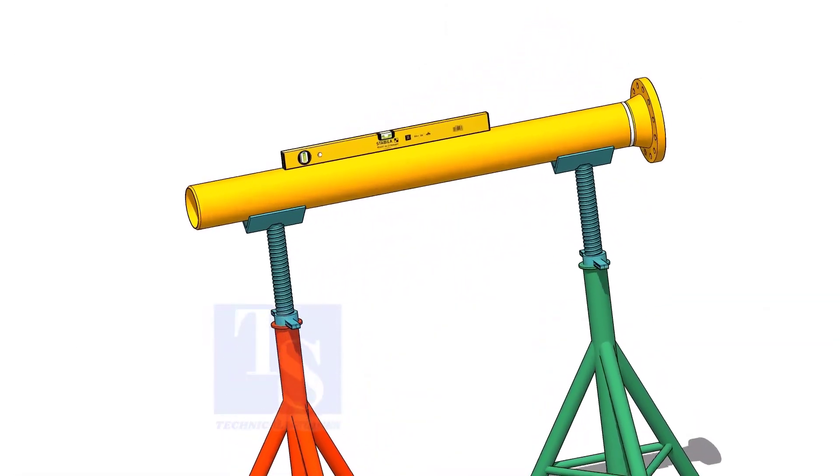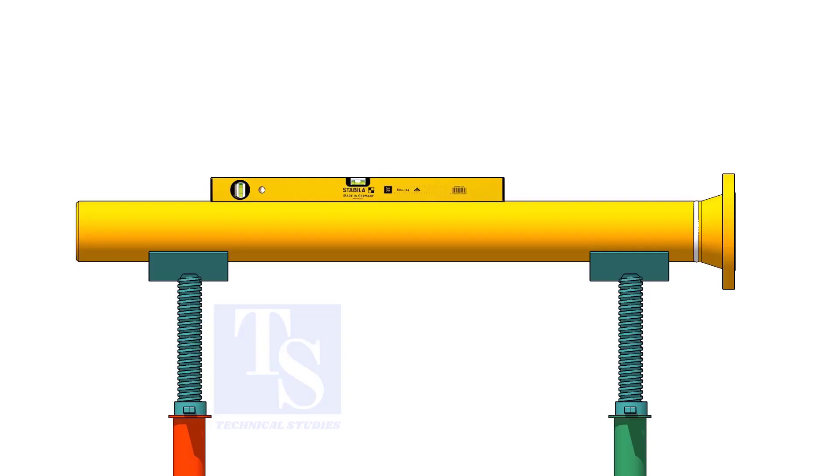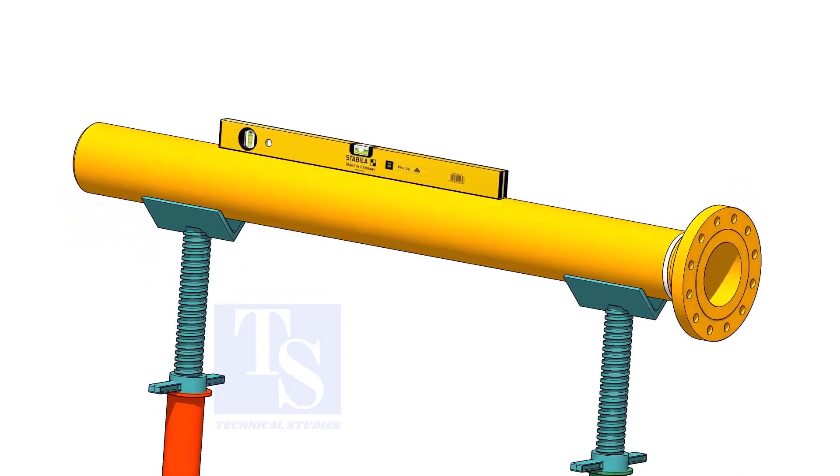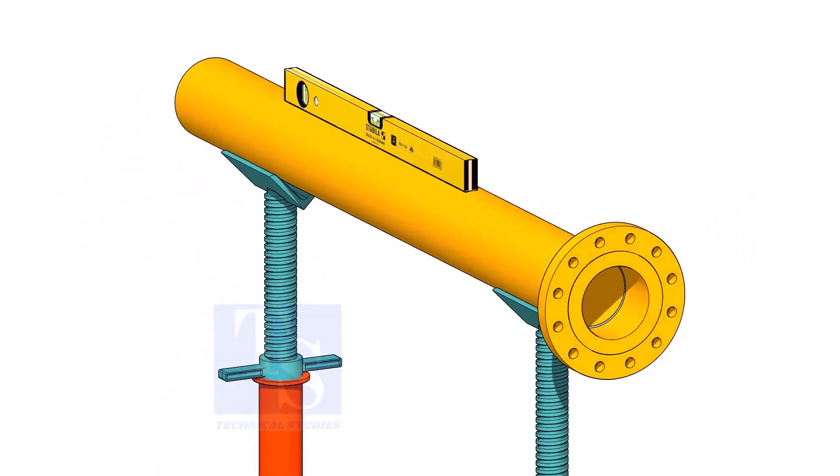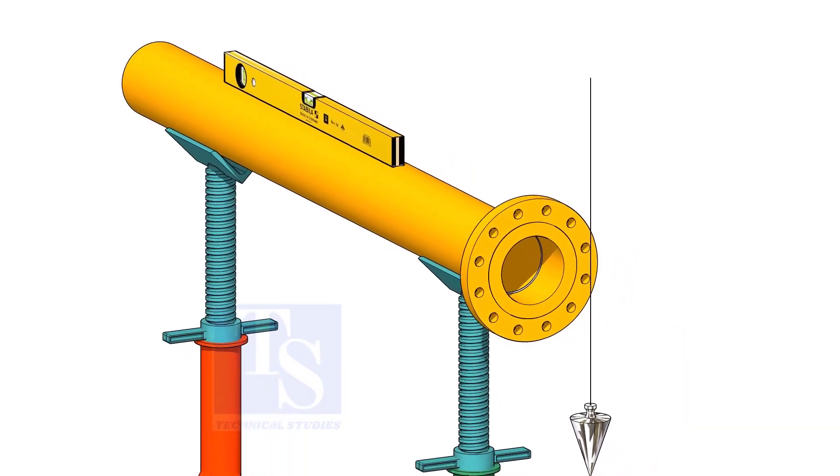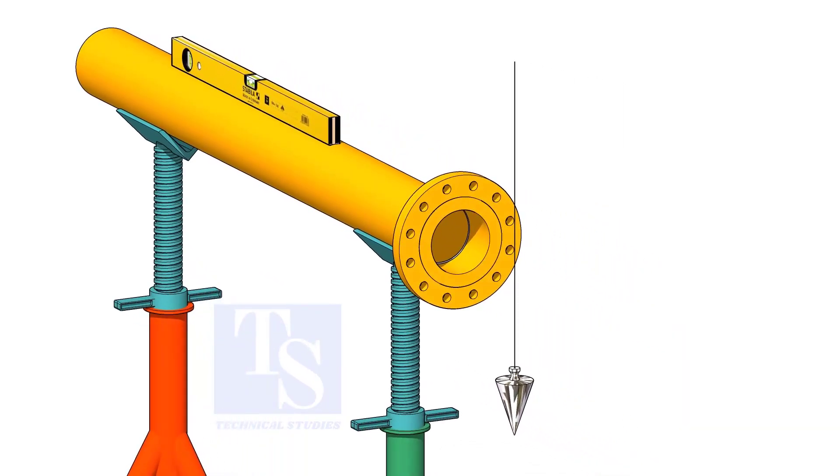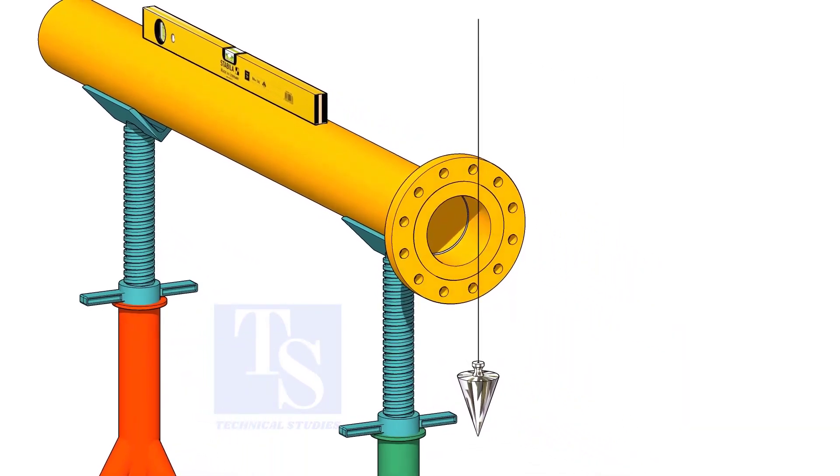Level the pipe and the flange. When you plumb the flange holes, choose the holes closer to the center of the flange.